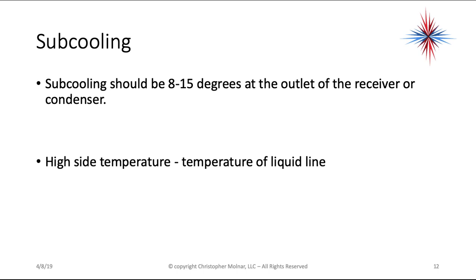Subcooling should be 8 to 15 degrees at the outlet of the receiver or condenser. The higher the efficiency equipment, this number is going to change a little bit. Subcooling is your high side temperature minus the temperature of the liquid line.